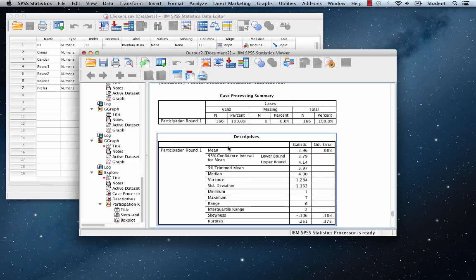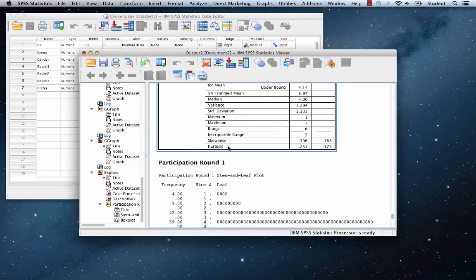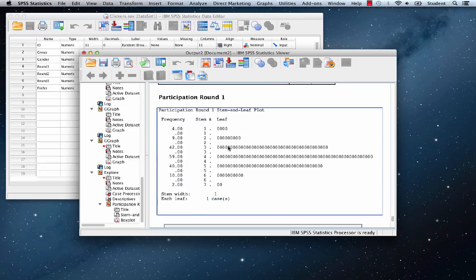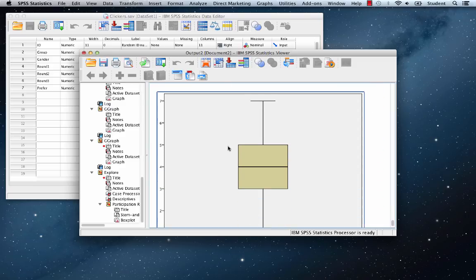This will create both a stem and leaf and a box plot, along with various other descriptive statistics. There's our stem and leaf, and there's the box plot.